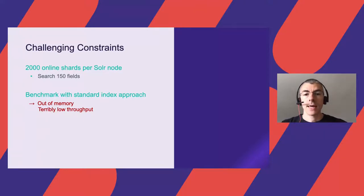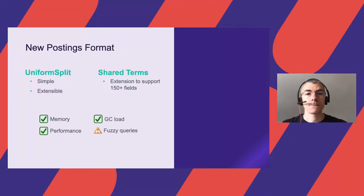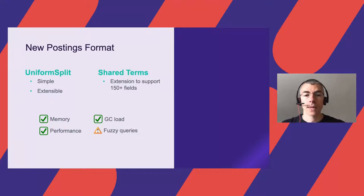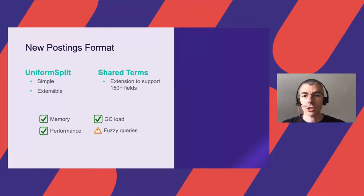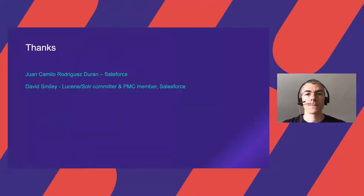Before explaining the details, let's look directly at the journey outcome. Given the constraints, we developed a new Lucene posting format called Uniform Split, designed to be simple and extensible. The base version follows the posting format API and the regular field index approach. An extension called SharedTerms makes it possible to store and access efficiently a massive number of fields. We ran a performance campaign, fixed issues, and eventually the performance and memory are good — except for spellcheck and fuzzy queries, which we'll explain in a moment. I'd like to thank Juan Camilo Rodriguez-Duran and David Smiley, who contributed to this project.